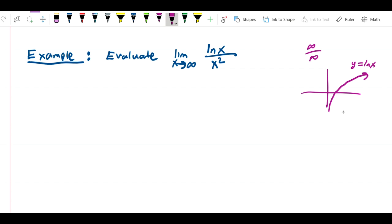x squared, of course, is just a parabola, and certainly as x approaches infinity, the y value of that function is going to grow to infinity. So this is in fact an infinity over infinity limit.